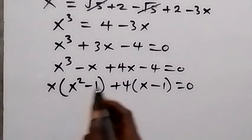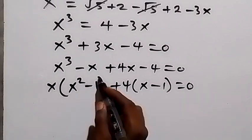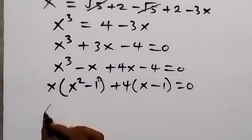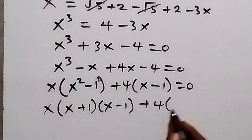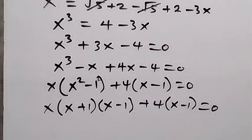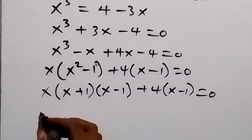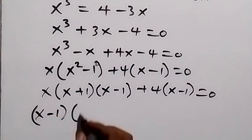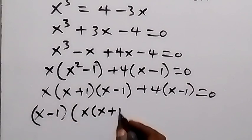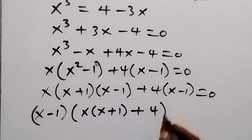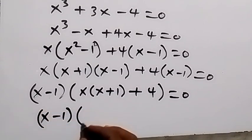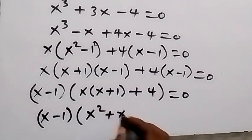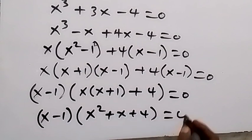Since x² − 1 equals (x+1)(x−1) by the difference of two squares, we get x(x+1)(x−1) + 4(x−1) = 0. Factoring out (x−1): (x−1)[x(x+1) + 4] = 0, which gives (x−1)(x² + x + 4) = 0.